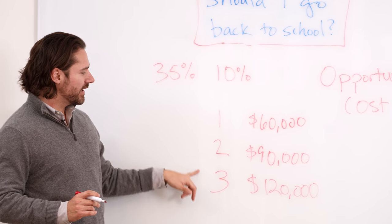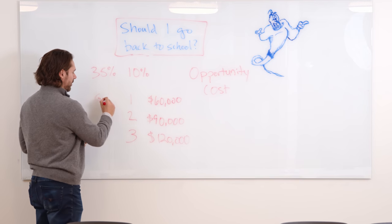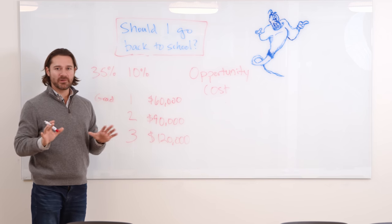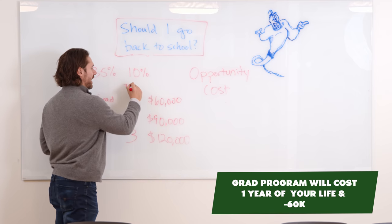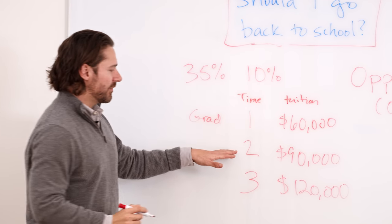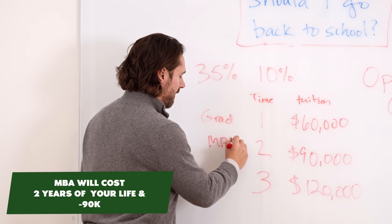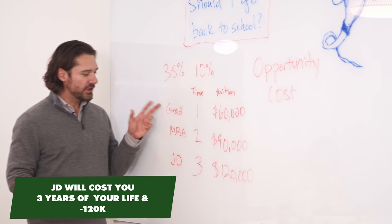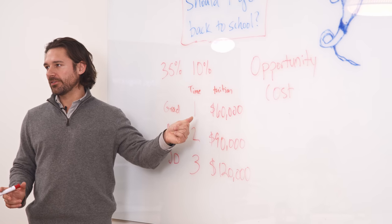Now, I have three options on the board right here. This is a one year grad program, or maybe it's like a one year coding bootcamp or something like that. But it's taking one year off of your life time and tuition. And then this might be a two year full-time MBA. And here's three years, we'll just call this a JD. So in each one of these situations, you have to stop working full time to pursue this degree.